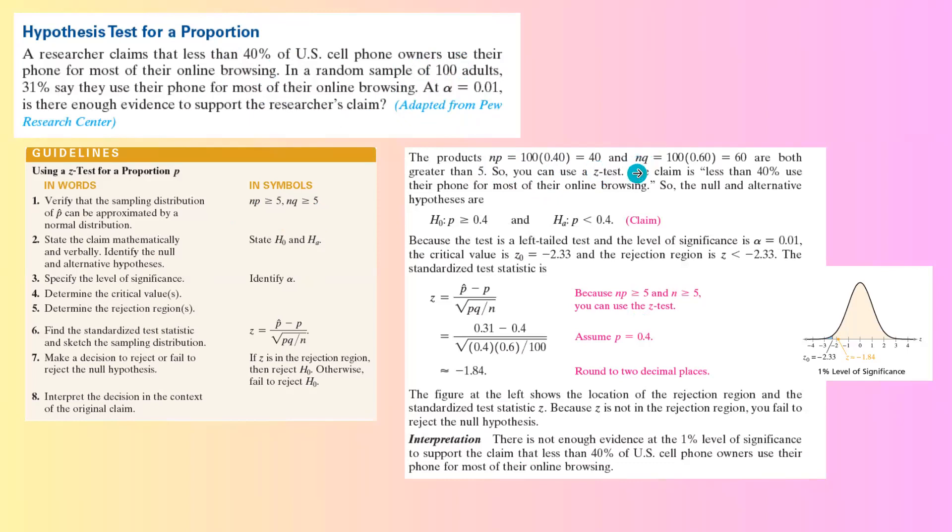N times Q. Q is the probability of failure for the population. 1 minus 40% is 60%. So 100 times 60% is 60. We're good with both of these numbers.